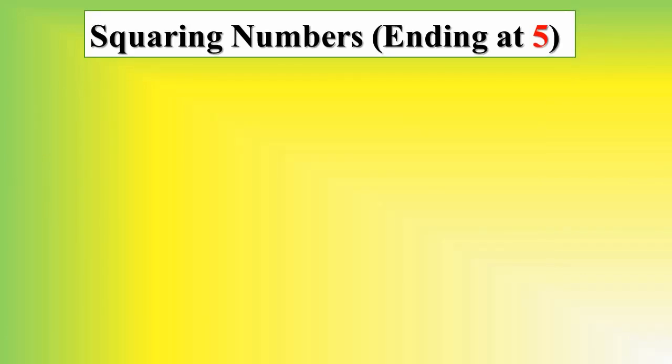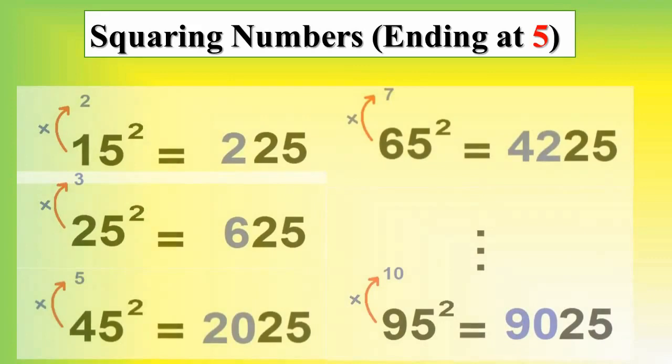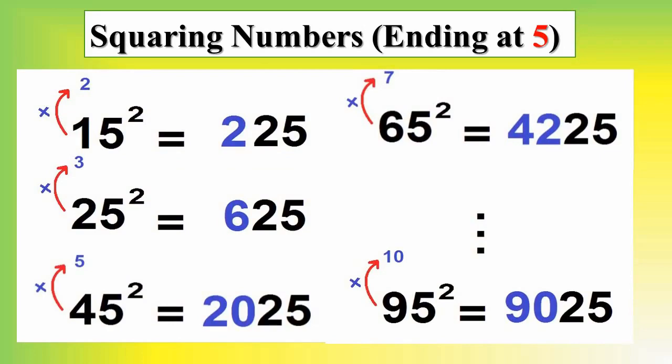As you see these examples, we have 15, 25, 45, 65, and 95. So we have five numbers ending at 5 that we're gonna square them. 15: the first number, we multiply the first number 1, multiply the next bigger number is 2, and we have 2 added by 25, so we have 225. And you see the other examples, that sounds very brilliant.